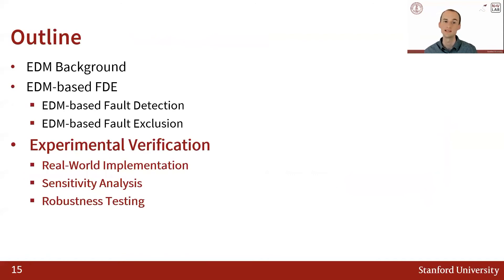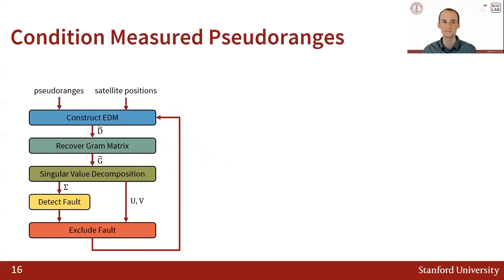Now that we know how to use Euclidean Distance Matrices to perform fault detection and exclusion, I will explain how to use EDM-based FDE in a real-world implementation and compare EDM-based FDE with residual-based and solution separation FDE using two real-world datasets. The block diagram on the left shows the framework of how to implement EDM-based FDE. We take in measured pseudoranges and satellite positions to construct an EDM D-tilde, from which we recover a gram matrix G-tilde. We perform the singular value decomposition of the gram matrix and use singular values and vectors to both detect and exclude faults.